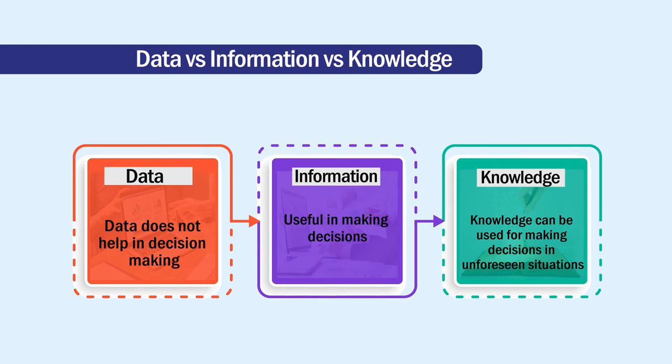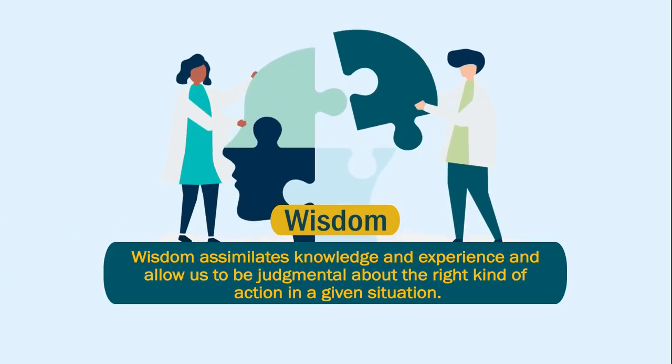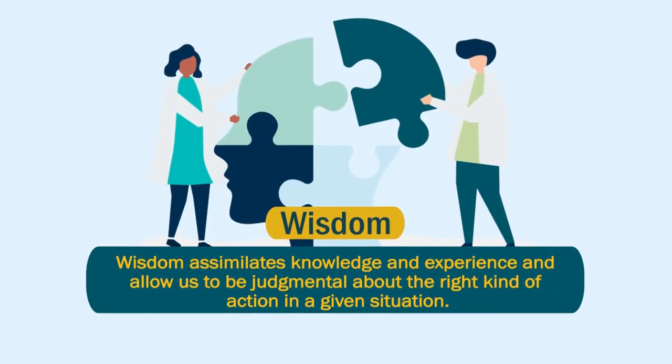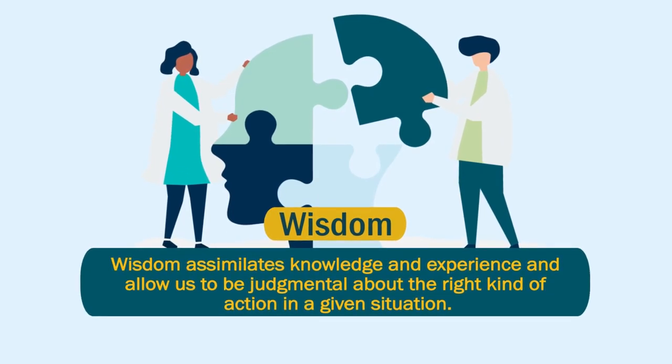Finally — wisdom. You have the data, you acquired information from it, and then you acquired knowledge. But wisdom assimilates knowledge and experience and allows us to be judgmental about the right kind of action in a given situation. A typical example is the knowledge about students' learning, technological development, and future job opportunities — multiple knowledge and information sources collected — and from those sources we bring wisdom. This allows us to take wise decisions about the future education curriculum: what courses should be taught, what technology students should work on, so that they become employable or self-employable.